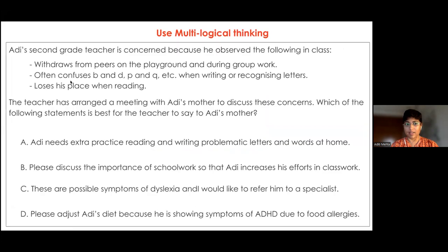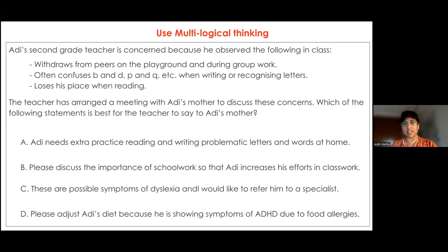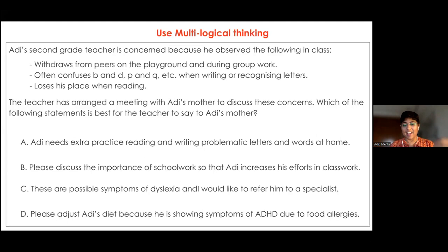Using multilogical or multi-tiered thinking — this is an example of a two-tiered thinking question where children have to look at two or three sets of information given earlier and then decide on the right answer with reasoning. As Anu ma'am was also saying at the beginning, we use 'choose the best response' and not 'the correct response' because we want children to demonstrate how they are thinking about a certain situation. Multilogical thinking is also a great way to transform LOTS into HOTS.